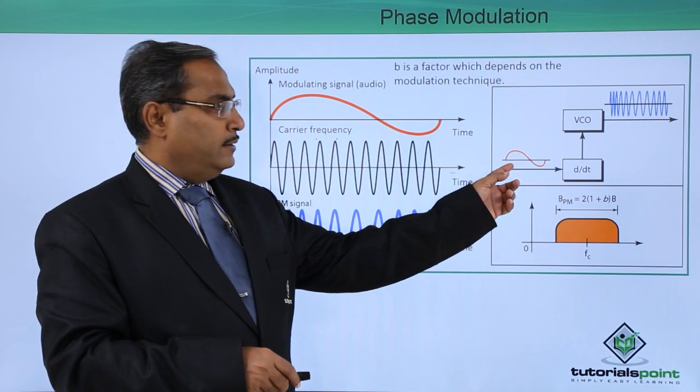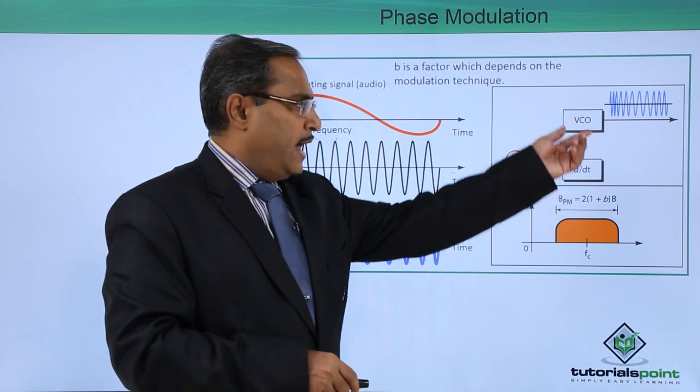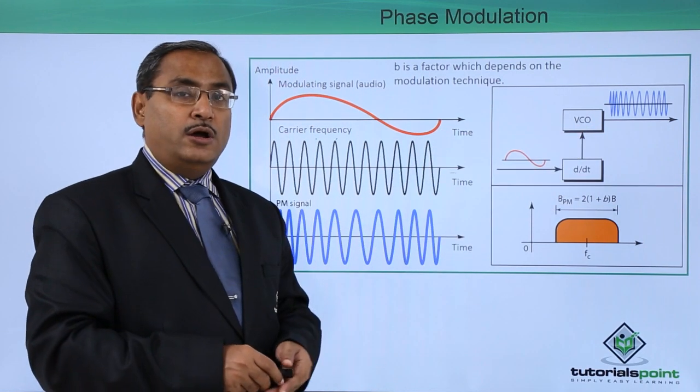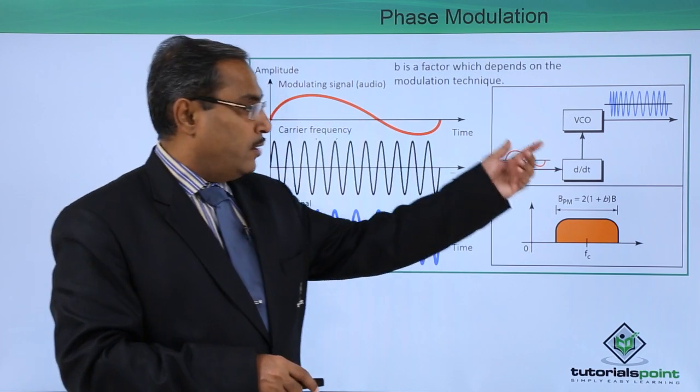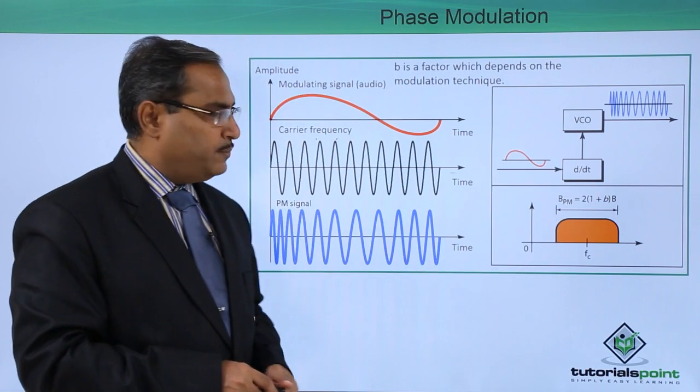This is our modulating signal and this is our d by dt. We are doing the derivative and there is a voltage controlled oscillator and that is our modulated signal's outcome. And this is BPM, that is phase modulation.